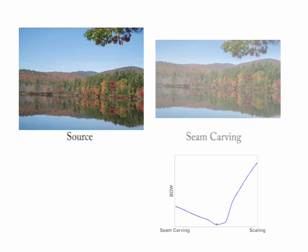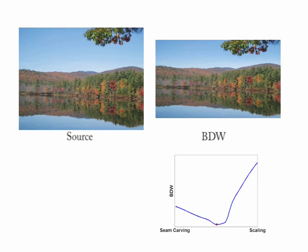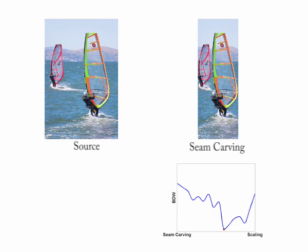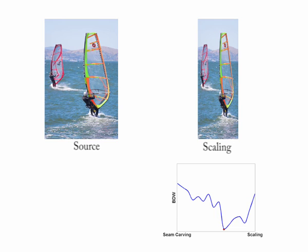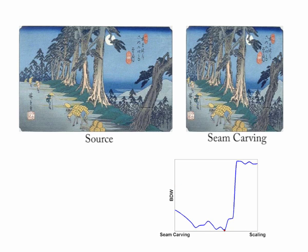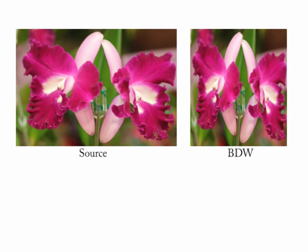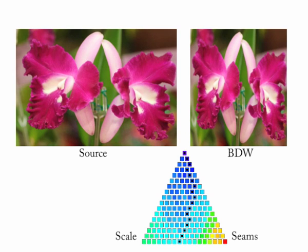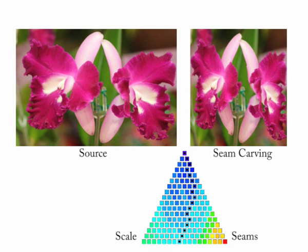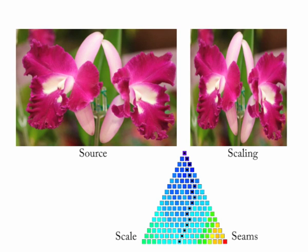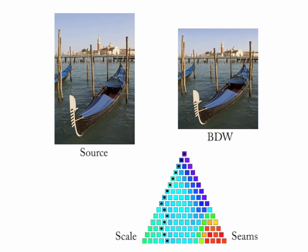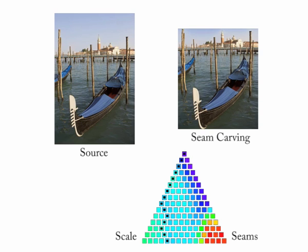We show results on various types of multi-operator optimizations. In these examples, we find the optimal transition point in a regular sequence using seam carving followed by scaling. These examples show the results of an optimal mixed path combining seam carving and scaling interchangeably. On the bottom is a visualization of the search space and the resulting optimal path.